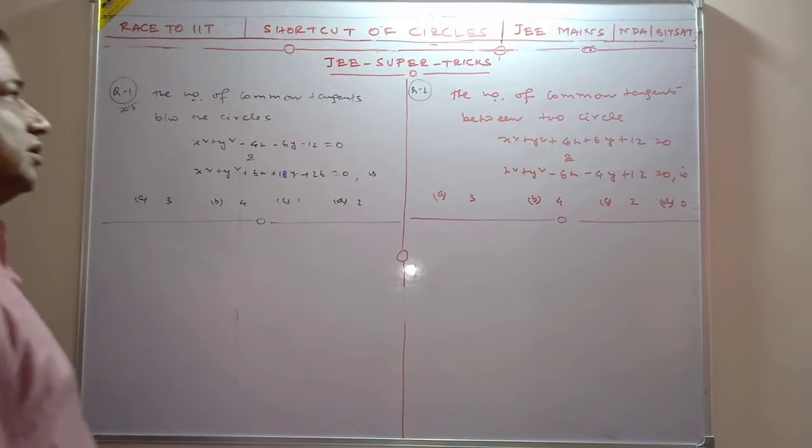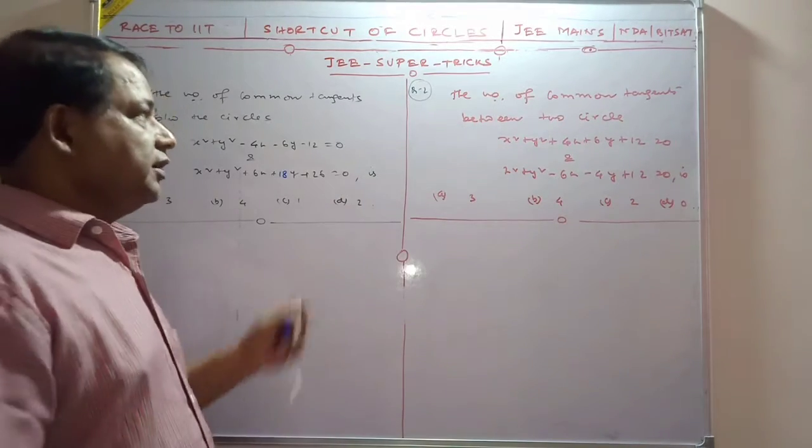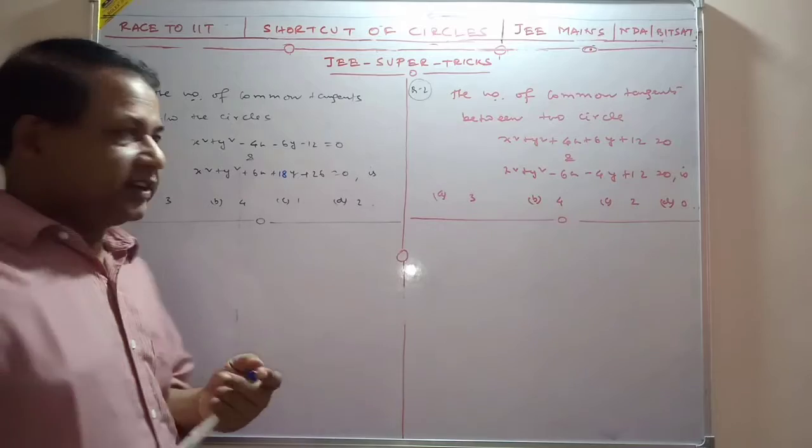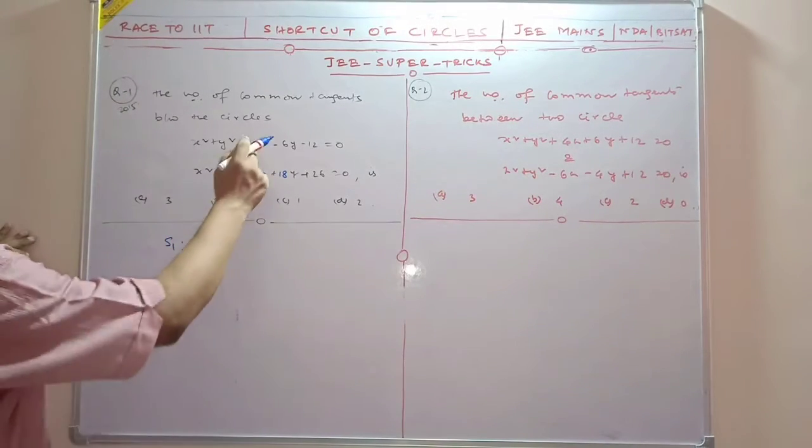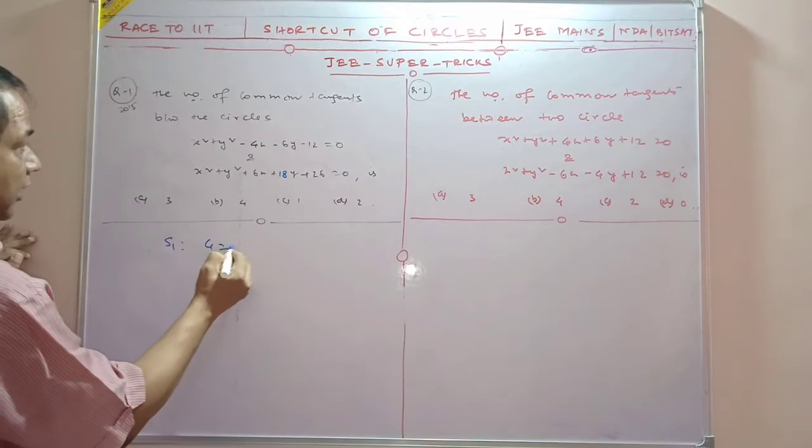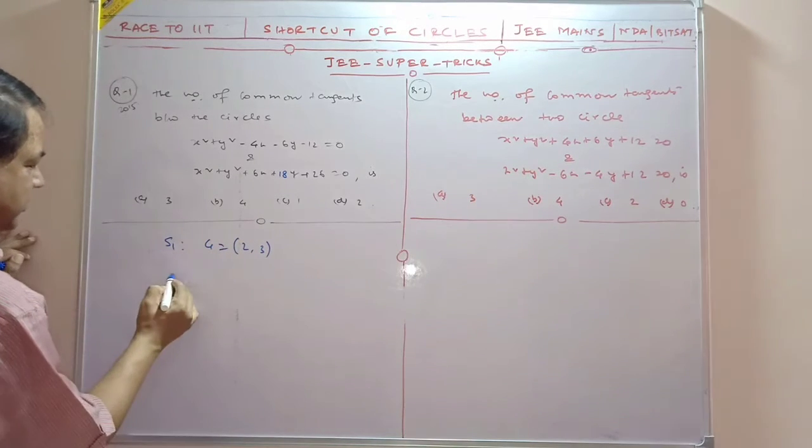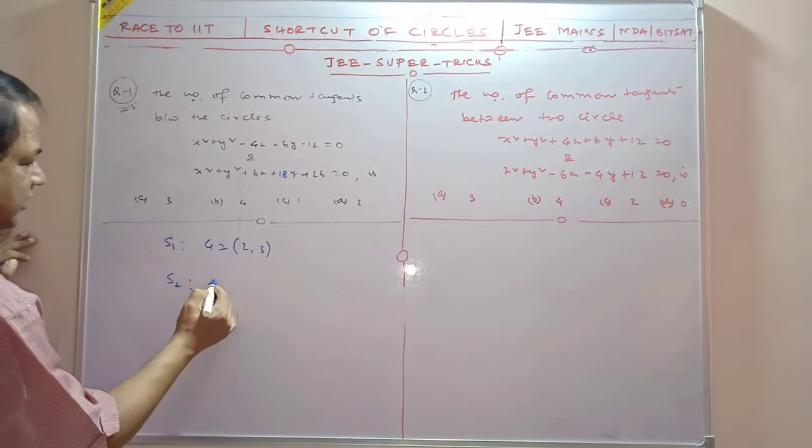Now we will discuss two questions related to number of common tangents between two circles. My dear friends, what are we going to do? The first circle has center at coordinates 2, 3. The second center is at minus 3, minus 9.